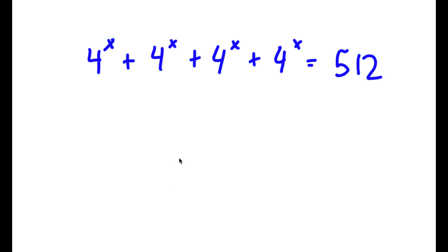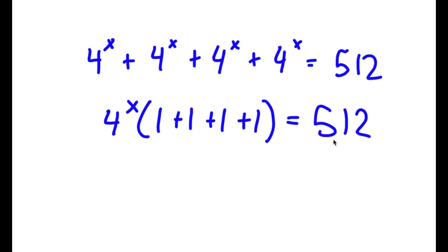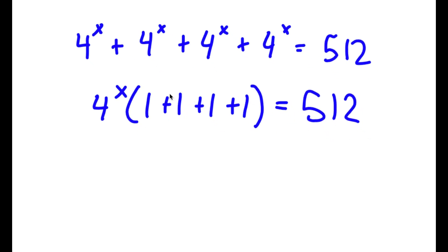In this problem, I have 4 to the power of x plus 4 to the power of x plus 4 to the power of x plus 4 to the power of x is equal to 512. I'm going to factor out 4 to the power of x. So I have 4 to the power of x times (1 plus 1 plus 1 plus 1), which is 4 to the power of x times 4, equal to 512.